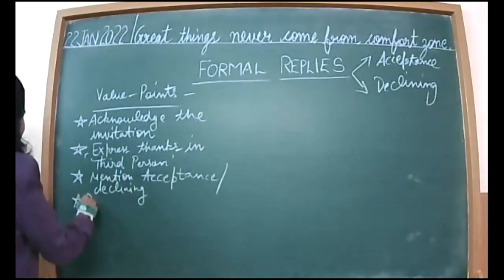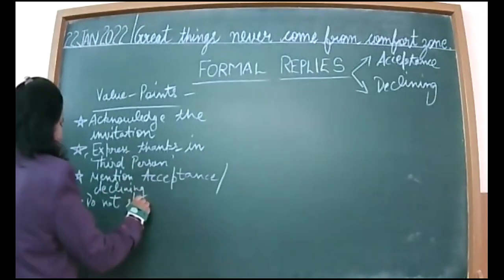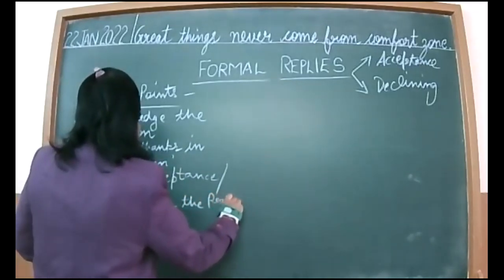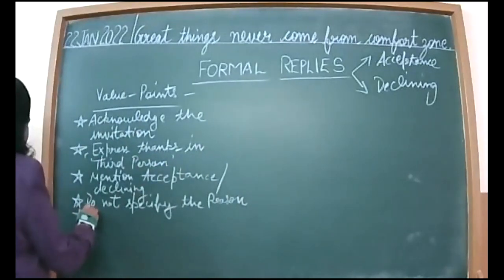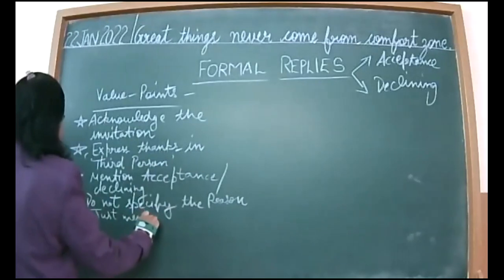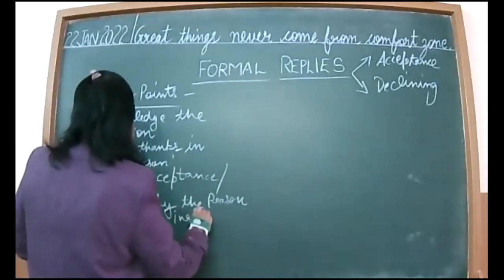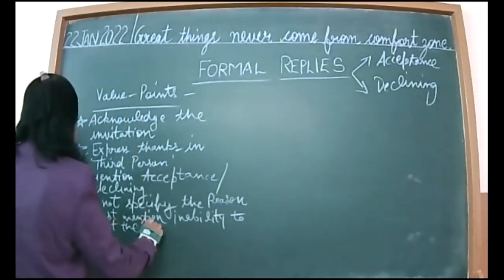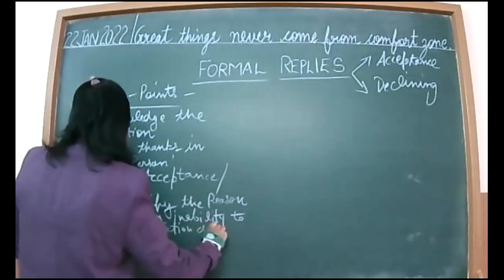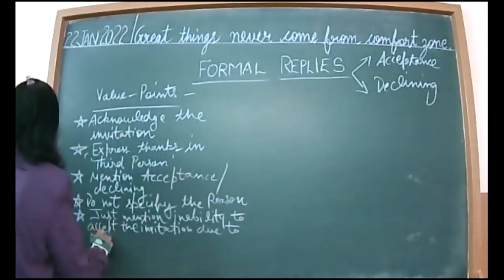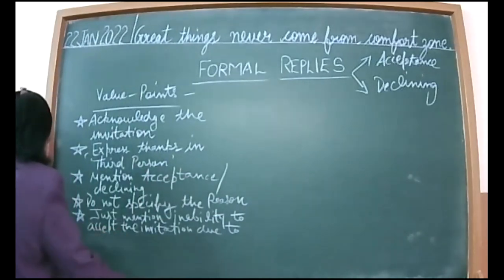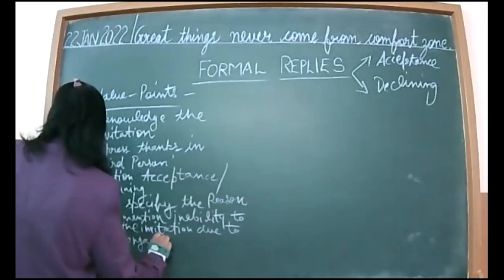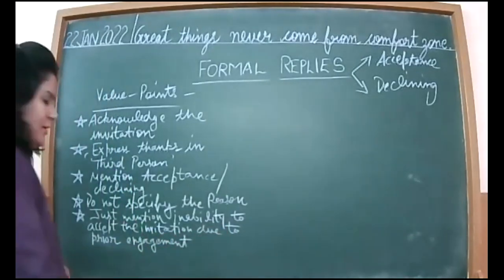Do not specify the reason in formal replies. Just mention your inability to accept the invitation due to prior commitments or prior engagement. 'Prior' means on a prior basis you have already committed your presence somewhere else and are busy on that day. So rather than telling the specific reason, use the term 'prior engagement' or 'prior commitment.'